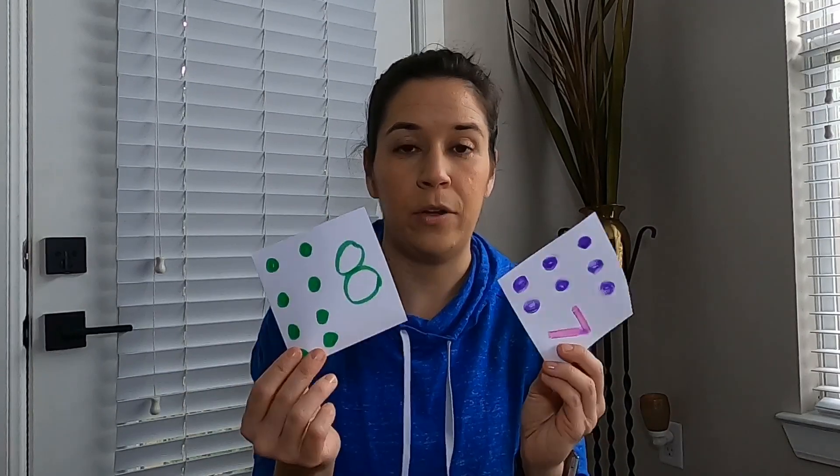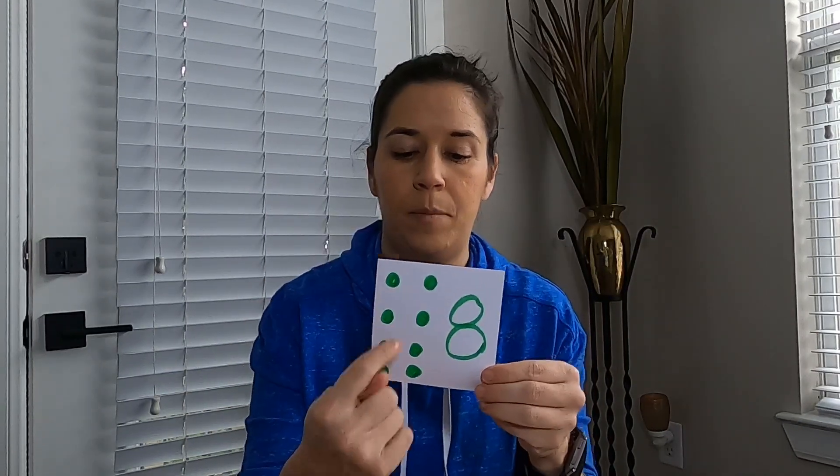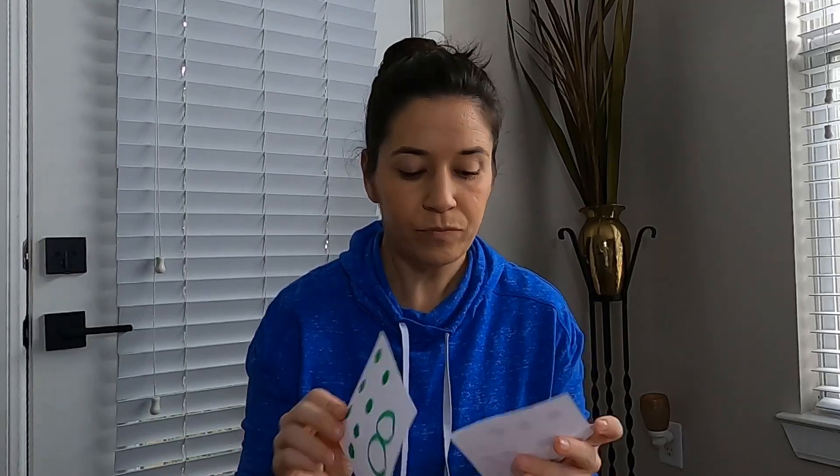You and the adult who's helping you can make some cards with dots on. Write the number and then put some dots on, counting it. Then you're going to need some little toys that you have around the house.